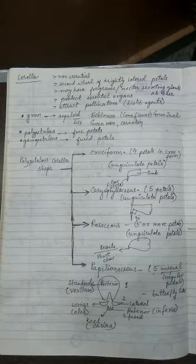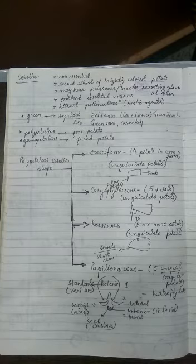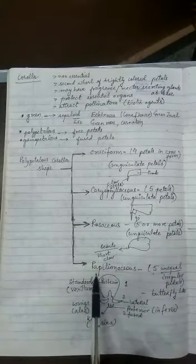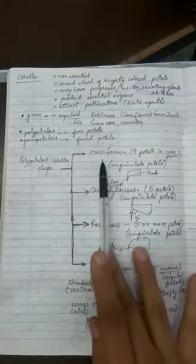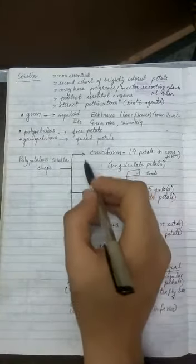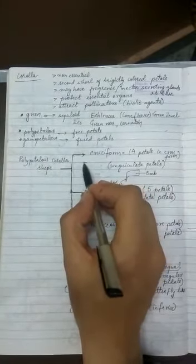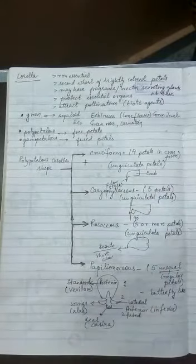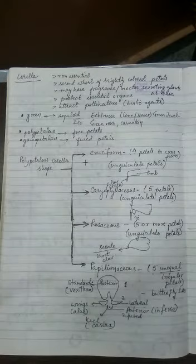Polypetalous if all the petals are free. Gamopetalous if all the petals are fused type. Now polypetalous basically has four main types. So those types are cruciform. Now cruciform means crucifix word comes from the Bible. Crucifix word stands for a cross. So cruciform means a cross type of form. So when you see the flower from top, it looks like a cross or a plus sign.